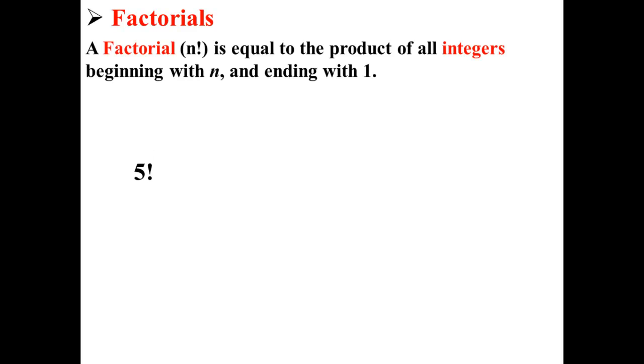A factorial in the form n! is equal to the product of all integers beginning with n and ending with 1. For example, 5 factorial is equal to 5 times 4 times 3 times 2 times 1, or simply 120.